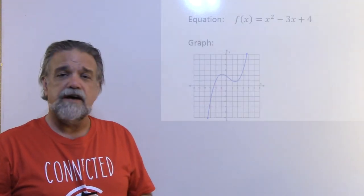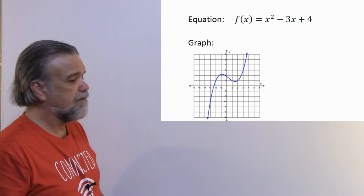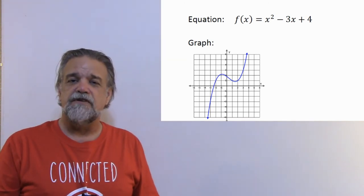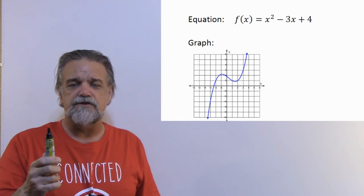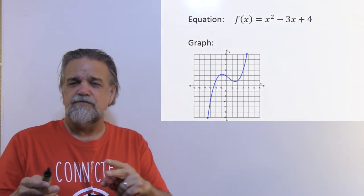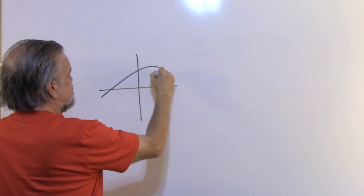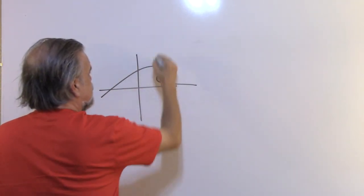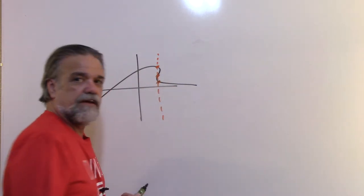How do we illustrate or describe functions? So far we've been using equations, which is the most common way. But you can also define a function using a graph. You've probably heard of the vertical line test — if you can draw a vertical line through a graph and it hits more than one point, then it is not a function.